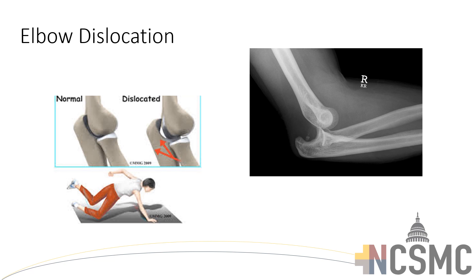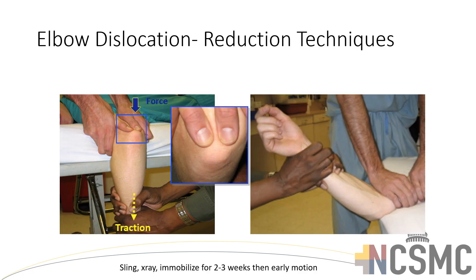Moving on to elbow dislocations. Elbows almost always dislocate posteriorly, meaning the elbow is located posterior relative to the humerus. This can happen with any kind of trauma, but most often with a fall on an outstretched hand. How you reduce it is by applying traction in the opposite direction — you can have an assistant applying traction at the olecranon while another applies traction downwards. If you don't get to it right away on the sideline, you'll often need sedation. These patients will need imaging to make sure there aren't any concurrent fractures, but if it's a standard dislocation, patients can be placed in a sling and immobilized for two to three weeks before following up.